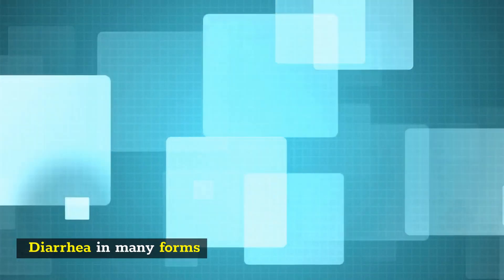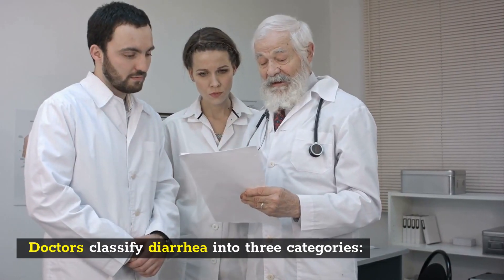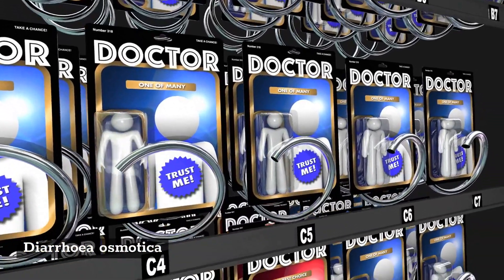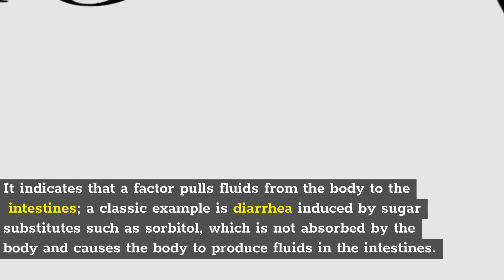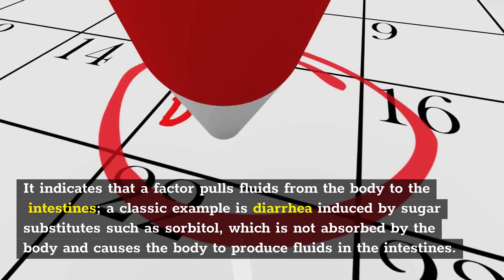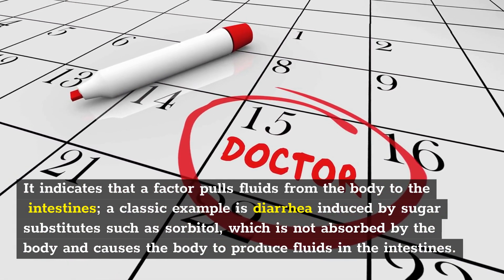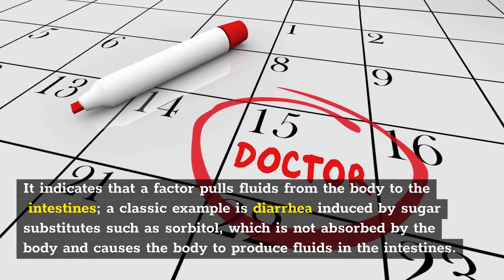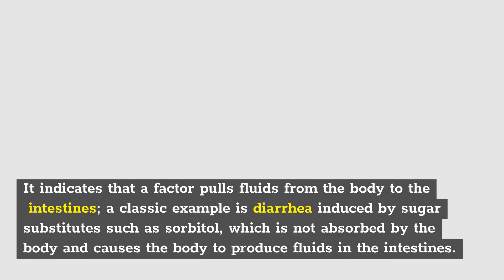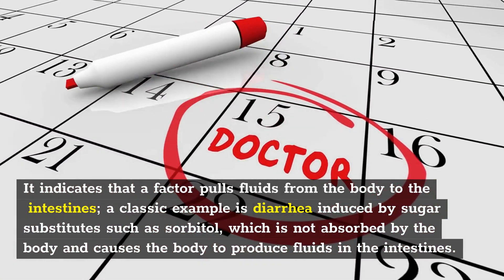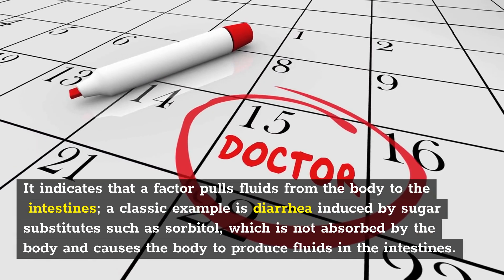Diarrhea comes in many forms. Doctors classify diarrhea into three categories. The first is osmotic diarrhea. It indicates that a factor pulls fluids from the body into the intestines. A classic example is diarrhea induced by sugar substitutes such as sorbitol, which is not absorbed by the body and causes the body to produce excess fluids in the intestines.